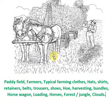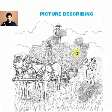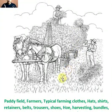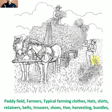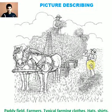Now we have all the vocabulary words, we can start describing the picture. In this picture I can see a paddy field. On the paddy field I can see two farmers working. They have finished harvesting the rice and have tied the rice into small bundles. The farmers are wearing typical farming clothes like hats, shirts, retainers, belts, trousers, and shoes. They are harnessed — they are harnessed to the horse wagon.